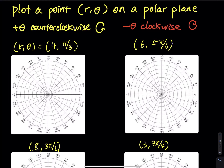This is the best polar plane I found online because it has the theta in both degree and radian. In this video, I want to keep the r positive — the directed distance positive. I want to see what happens if I use a positive angle and what happens if I use a negative angle. For positive angle, we have to spin counterclockwise.